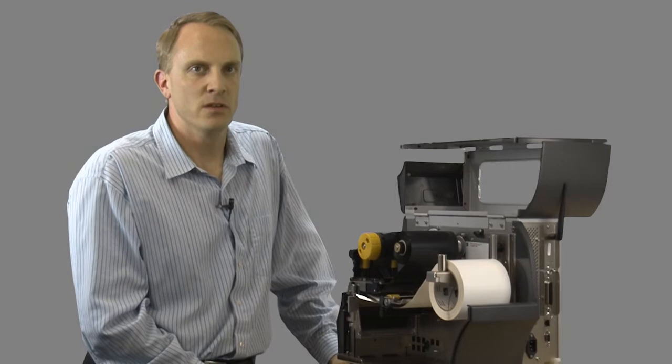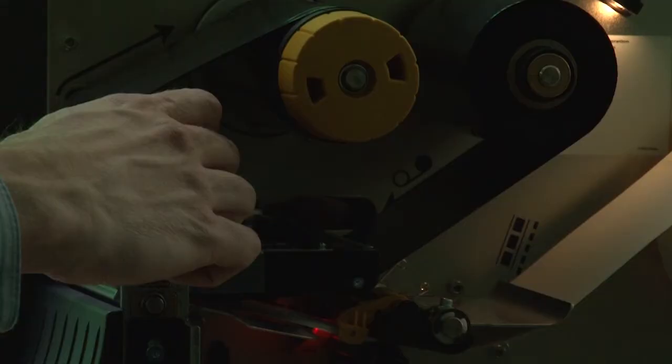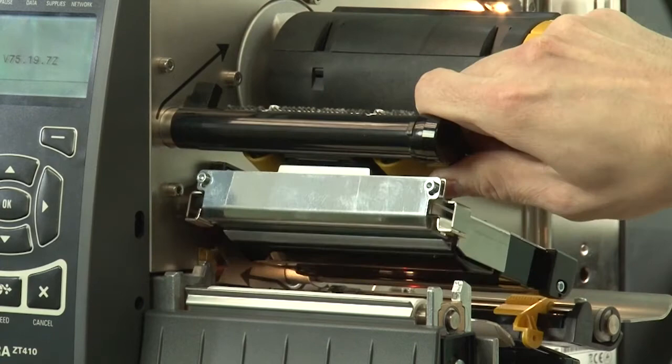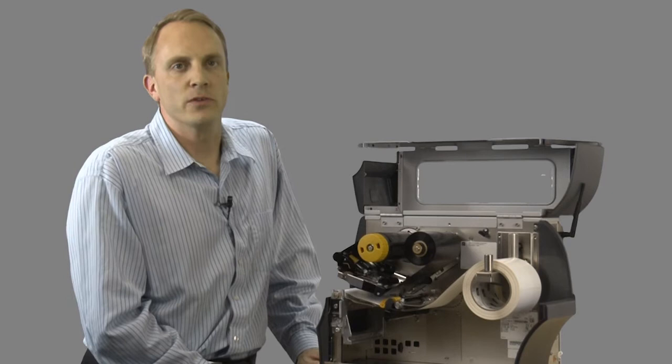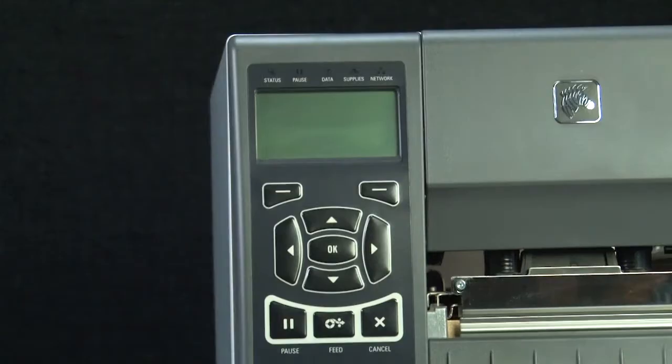The ZT400 has also greatly advanced the ease of use via a much improved user experience. The printer has lighted media and ribbon paths, controlled by the opening and shutting of the printer door. The new flip-up side loading mechanism provides efficient media and ribbon loading, while eliminating potential ribbon wrinkle startup issues.